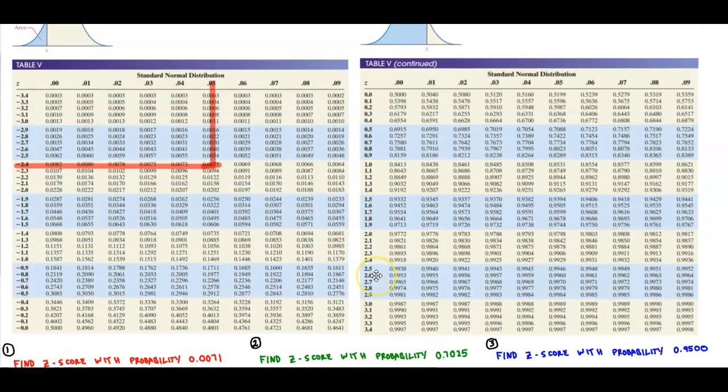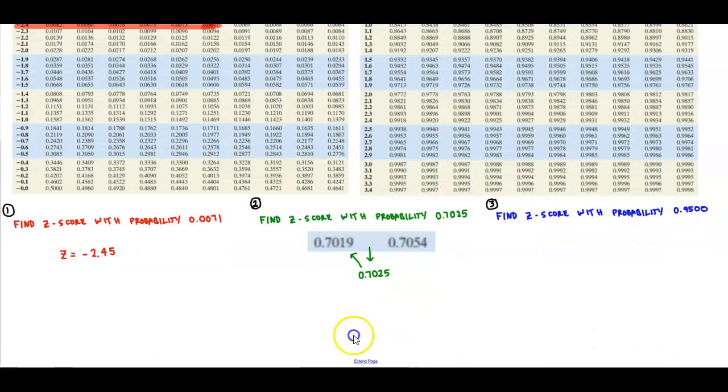So now going back up over here, we're going to go to the area of where 0.7019 is, scroll to the left, which is the beginning part of our z-score, which is 0.5. And the last part is 0.3 or 0.03. So therefore, our z-score is going to be 0.53.